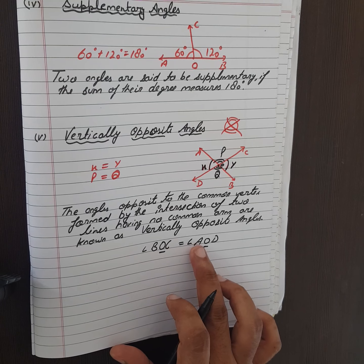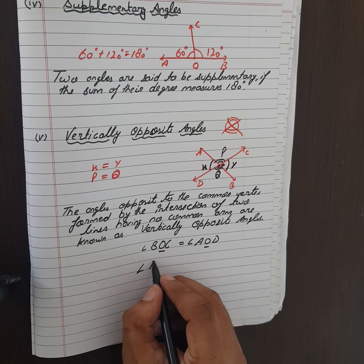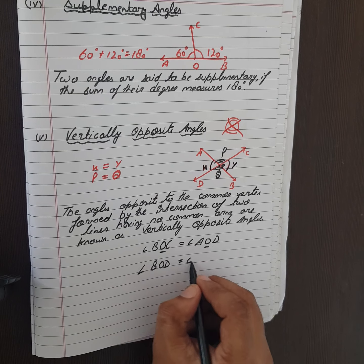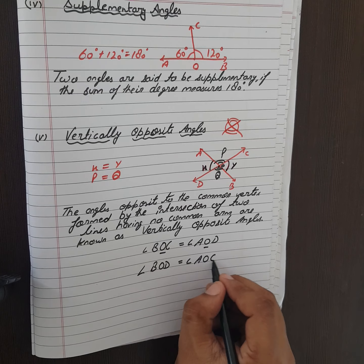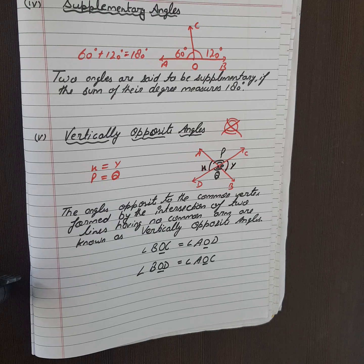Move on, next is supplementary angles. Two angles are said to be supplementary if the sum of their degree measures 180. If the sum of two angles is 180 degrees, then we say supplementary angles. 120 plus 60 equals 180, it means they are supplementary angles. This linear pair is also supplementary because their sum is 180 degrees.